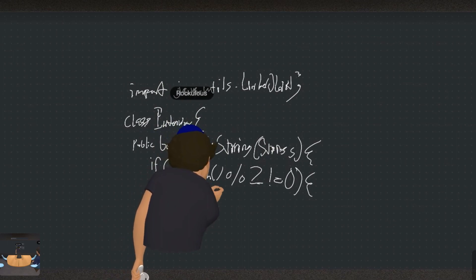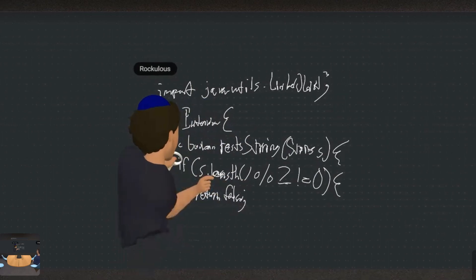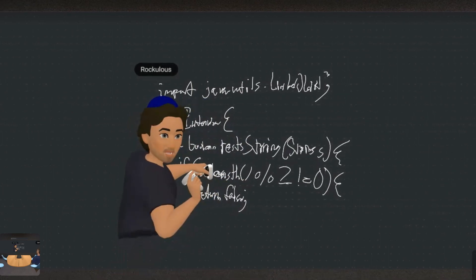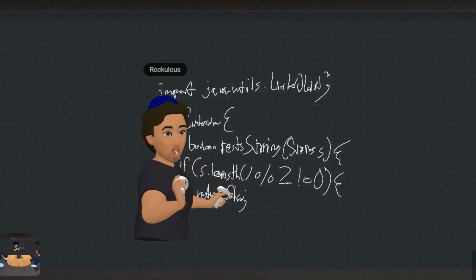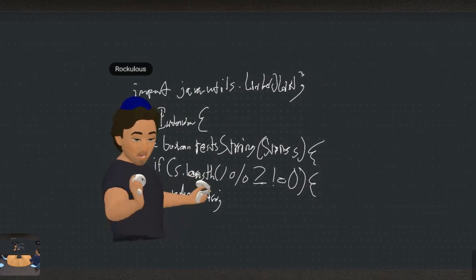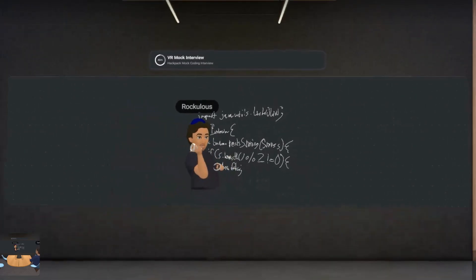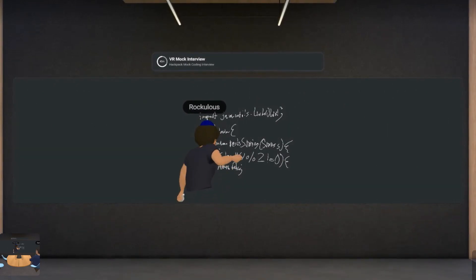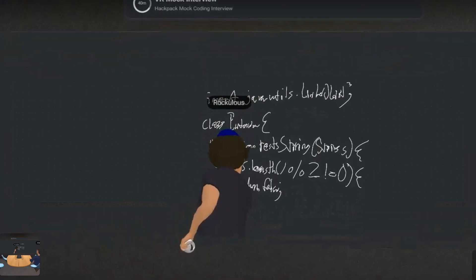Right here I'm just checking to see if the string length can be divided by two. If not, then we know it's an odd-numbered string and we can exit immediately because we know there aren't matching characters. Otherwise, else, we continue on.